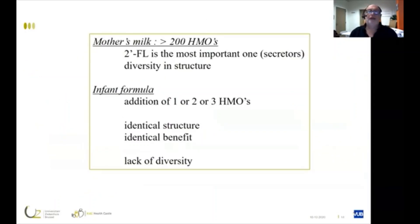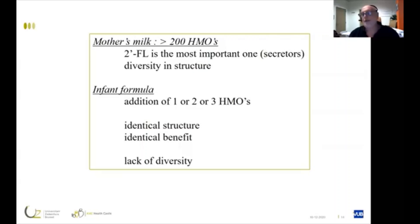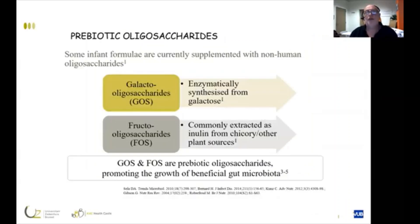Mother's milk has over 200 HMOs, and 2-FL is the most important one, at least in the 70-75% of mothers who are secretors. There is a huge diversity in structure. Today in infant formula, we add one, two, three, or maybe in a couple of months five HMOs — but that is far from the 200 different ones. We add the molecule with the identical structure, which has identical benefits, but we lack the diversity present in mother's milk.